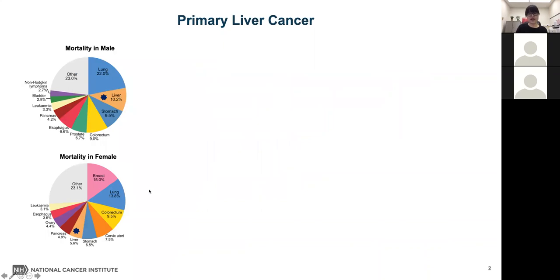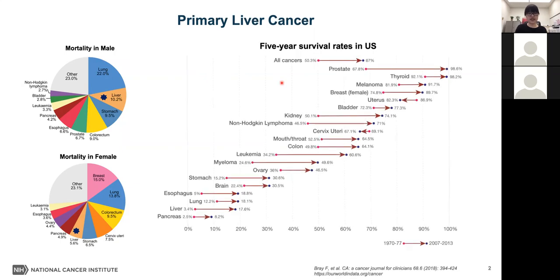Liver cancer is one of the leading cancer killers worldwide. It is the second leading cause of cancer-related deaths in males and fifth in females. In the USA, when we look at changes in five-year survival rates across cancer types from the 1970s to around 2010, there is an overall increase for most cancer types. However, liver cancer has very low five-year survival rates of less than 20 percent.